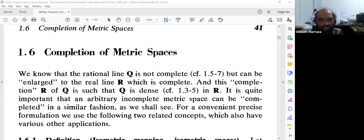The rational line Q is not complete, but can be enlarged to the real line R which is complete. This completion R of Q is such that Q is dense in R. It is quite important that an arbitrary incomplete metric space can be completed.